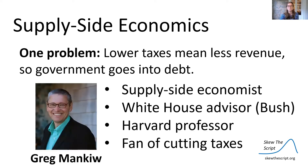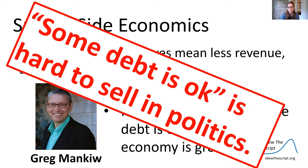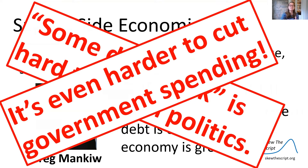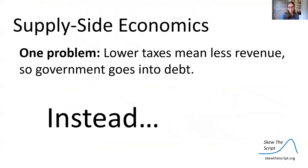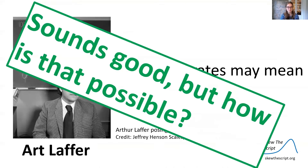Greg Mankiw is a supply-side economist, a White House advisor under the Bush administration, a Harvard professor, and a huge fan of cutting taxes. He says we should cut government spending, and if you can't cut spending, some debt is okay as long as the economy is still growing. "Some debt is okay" is hard to sell in politics, and it's even harder to cut government spending. So Art Laffer says that lowering tax rates may mean more tax revenue — but how is that possible?